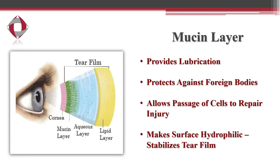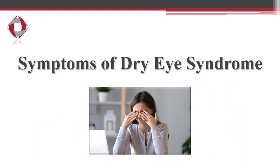The inner mucin layer is secreted by special cells of the conjunctiva called goblet cells. The purpose of this layer is to provide lubrication and protect against foreign bodies. It also allows cells to pass through the tear film to reach tissue and help repair the ocular surface in case of injury. It also makes the surface of the tear film hydrophilic, which is water-loving, essentially helping stabilize the tear film in between blinks.